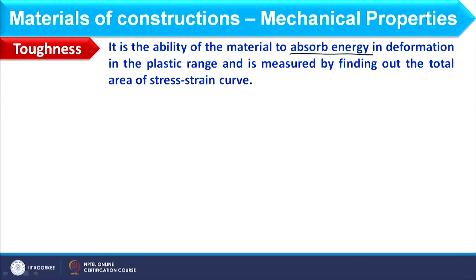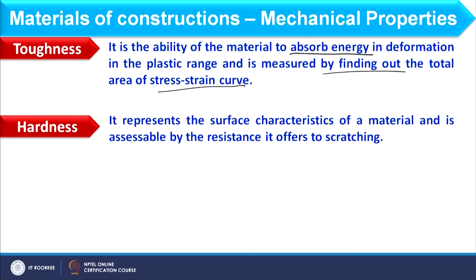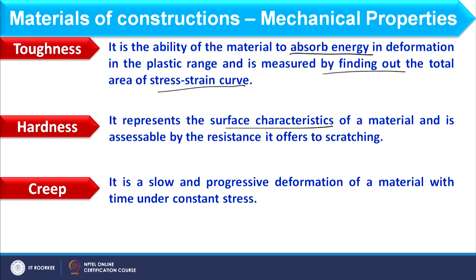Toughness is the ability of the material to absorb energy in deformation in the plastic range, measured by finding the total area of the stress-strain curve. Hardness speaks about the surface characteristic of the material — a very hard material resists scratching. Creep is a slow and progressive deformation of a material with time under constant stress.